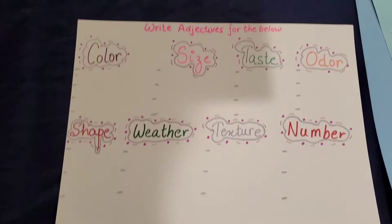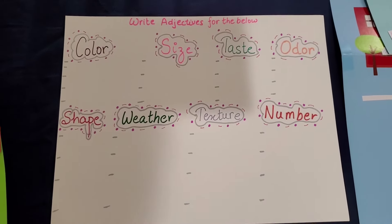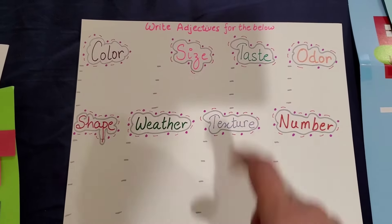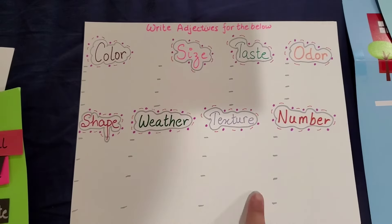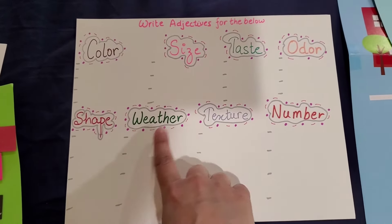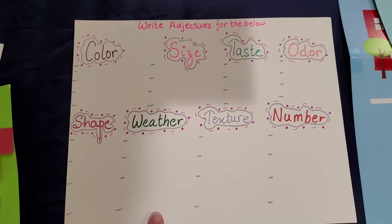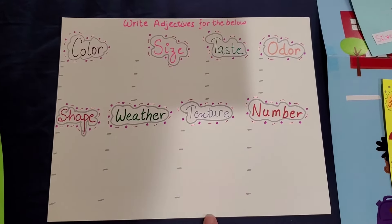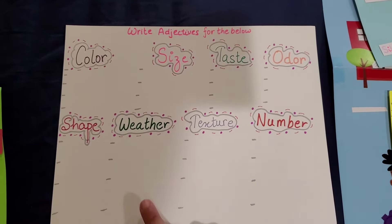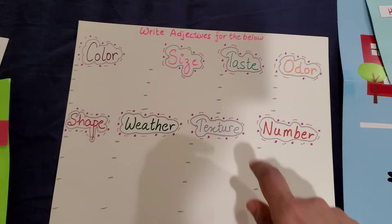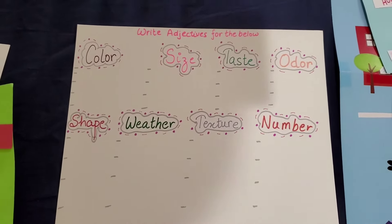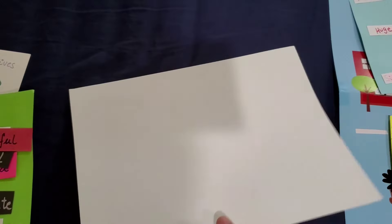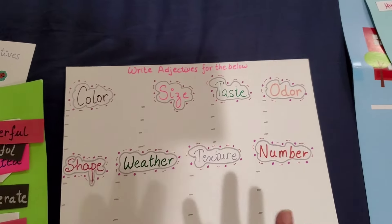By now, after so many activities, you'll be able to write adjectives for different categories. For color: name one to six of them. Then size, taste, odor, number, texture, weather, and shape. Weather adjectives: cloudy, calm, sunny, moist, humid, foggy, or rainy — Vivan just told me that one from the background. Texture: rough, smooth, plain, velvety. Taste: bitter, sour, sweet, savory, umami. Odor: anything you can think of. This is the time for kids to read and fill in the categories.